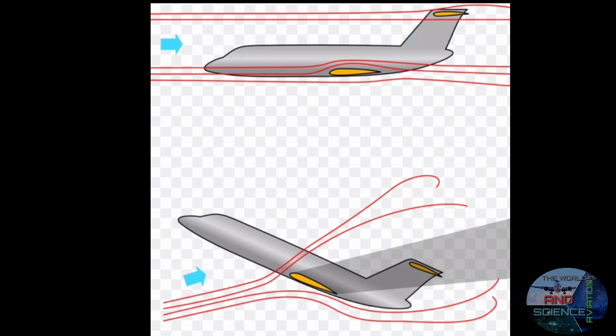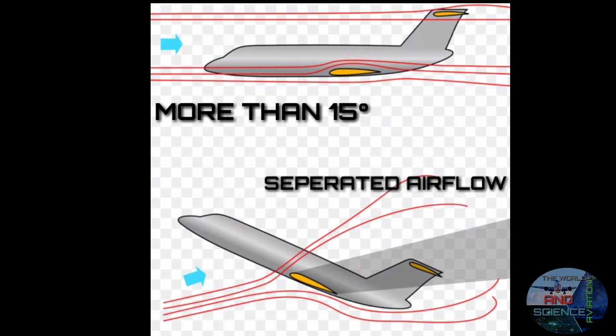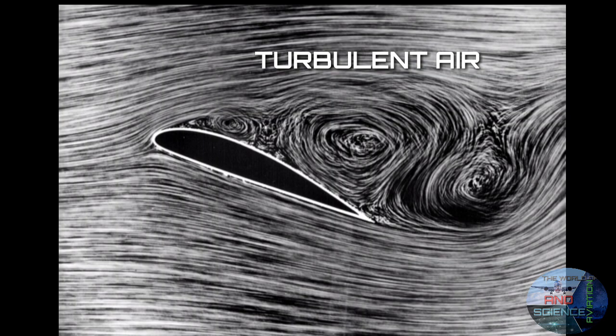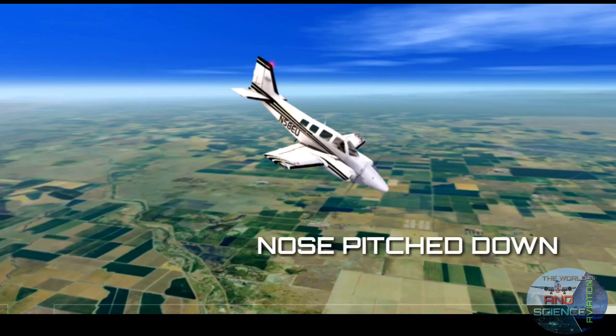A stall is a reduction in the lift generated by the aircraft when the angle of attack is increased. This occurs when the angle of attack exceeds 15 degrees. A higher angle of attack separates the airflow over the wing as shown, causing turbulent air to flow over the wings. This forces the aircraft's nose to pitch down.